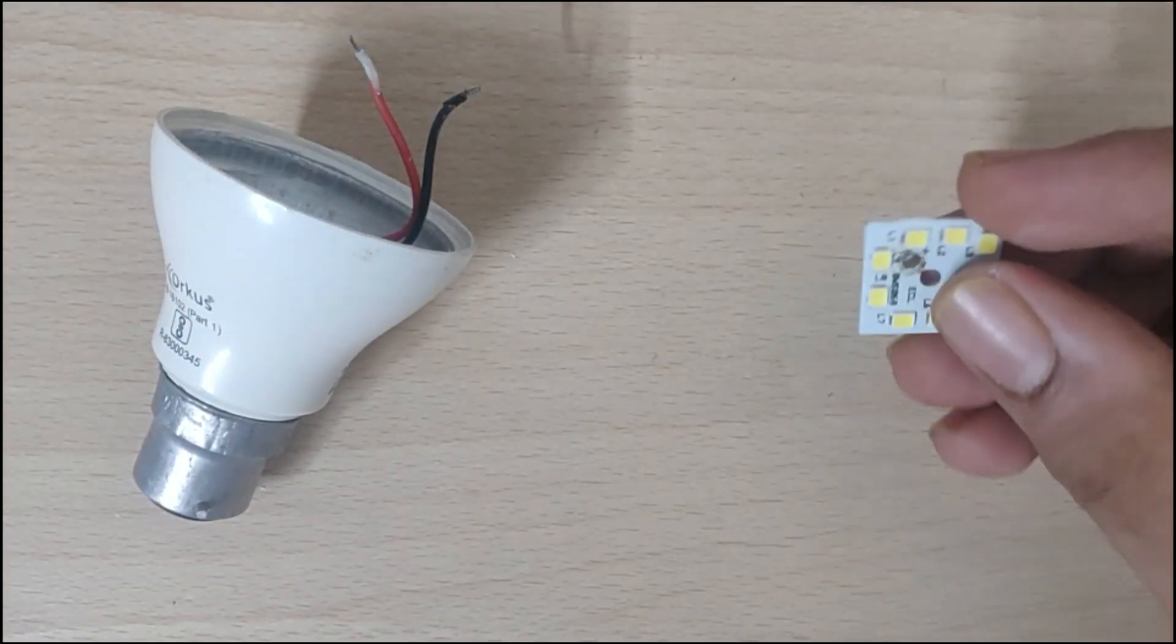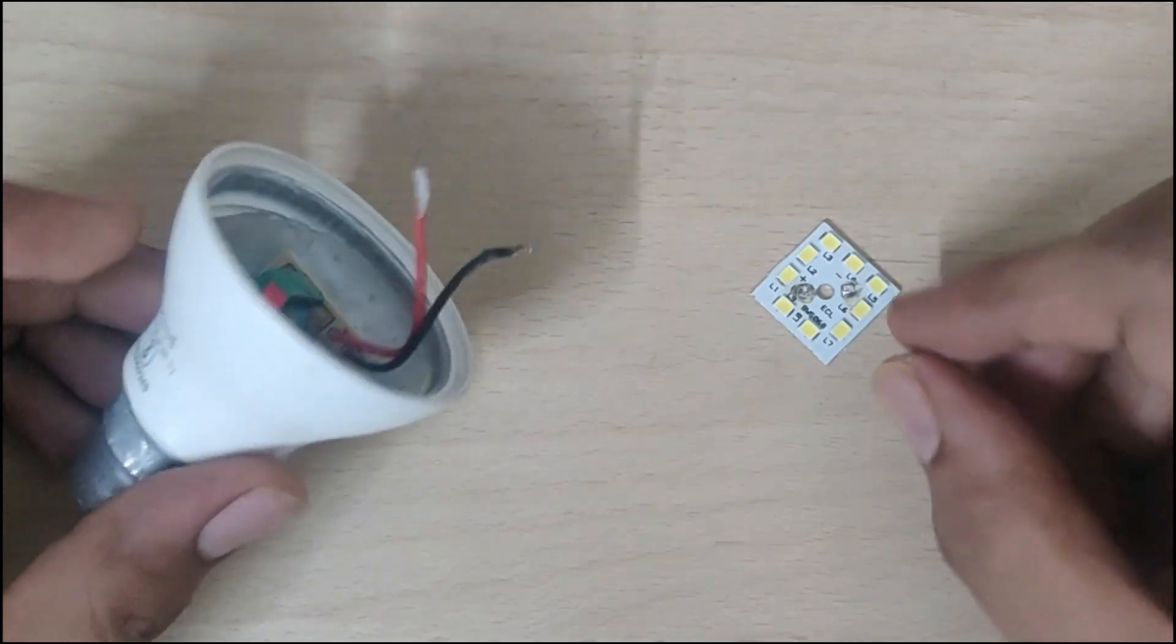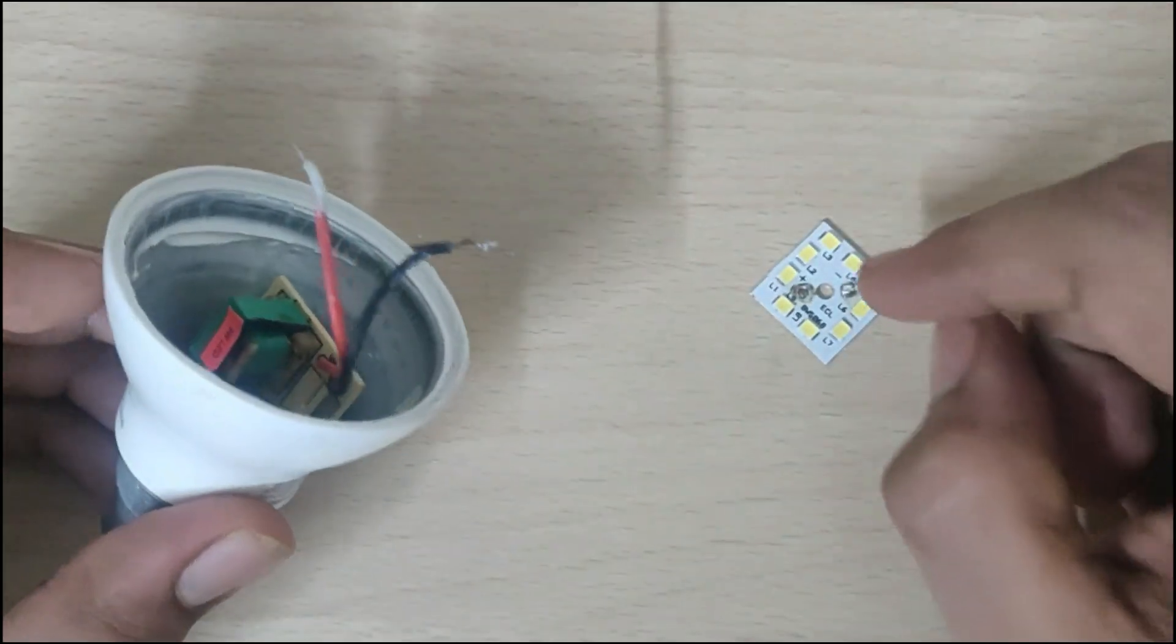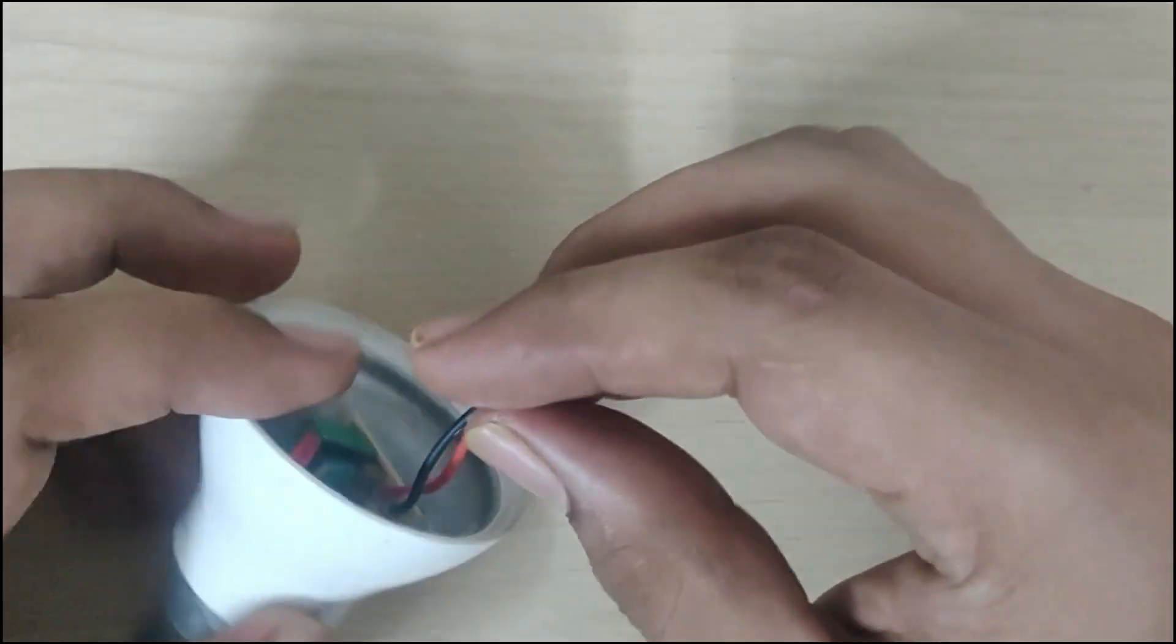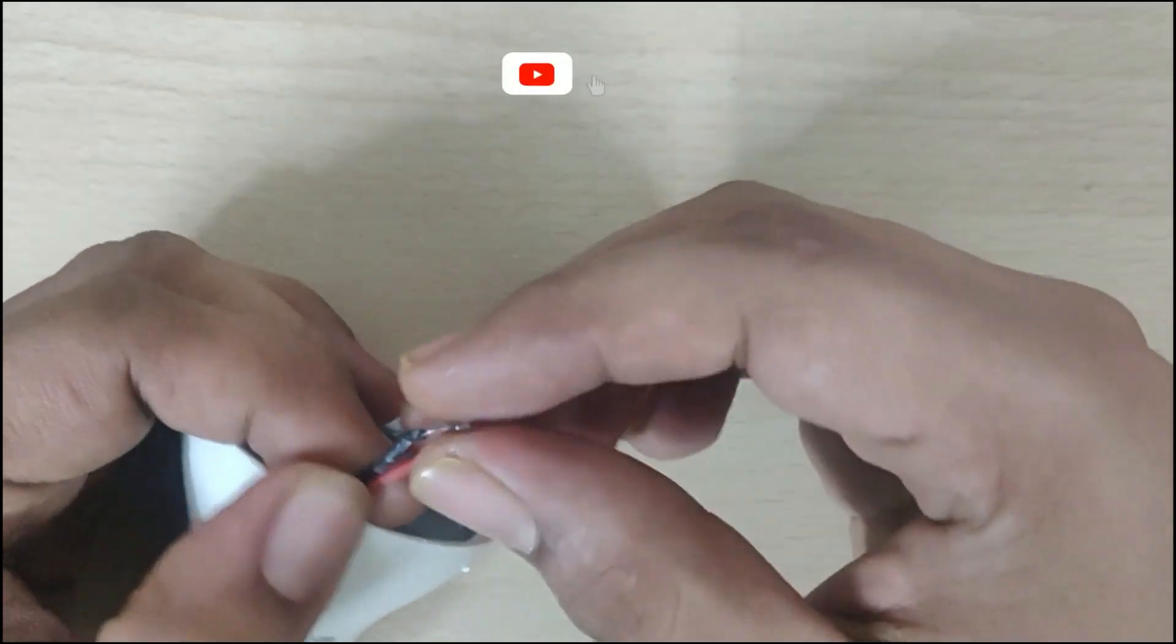So once you get the replacement LED, then you need to connect the positive red and negative black wire.